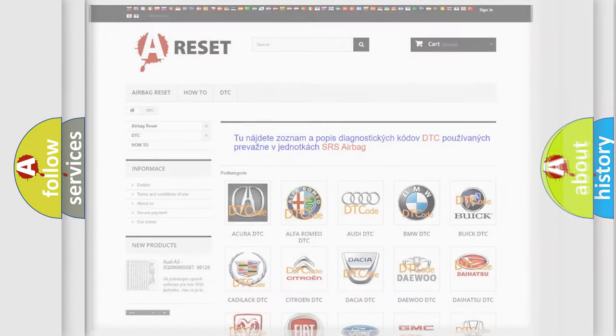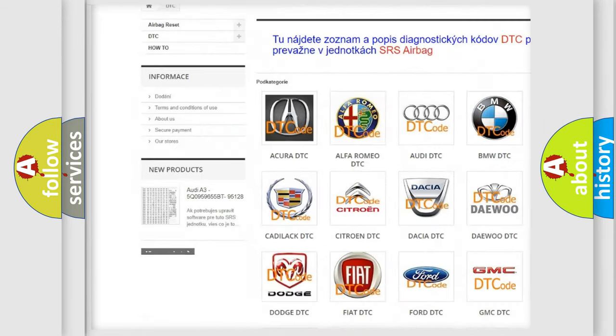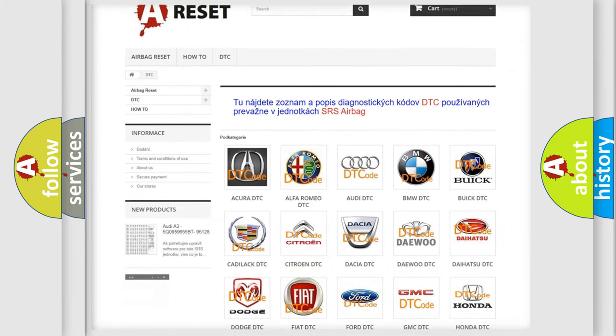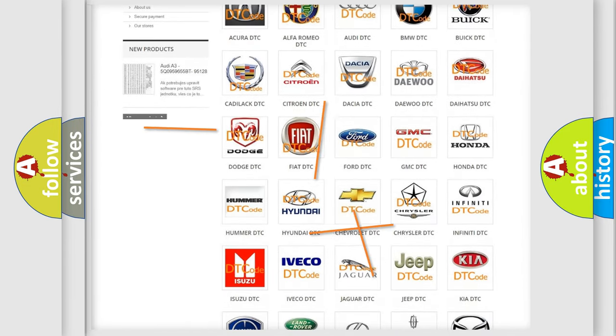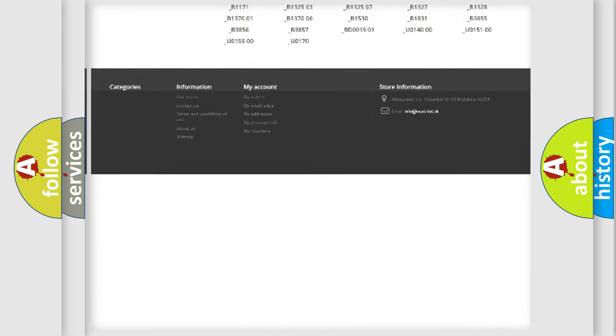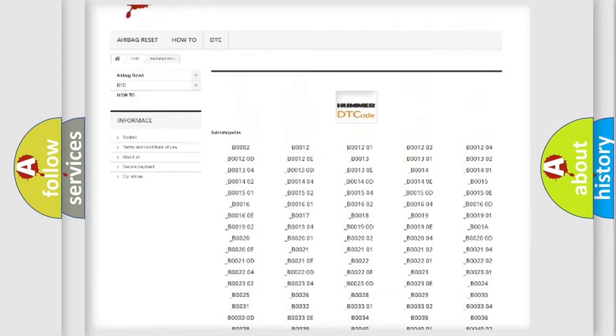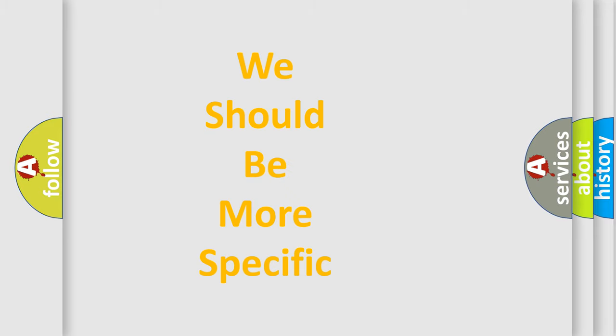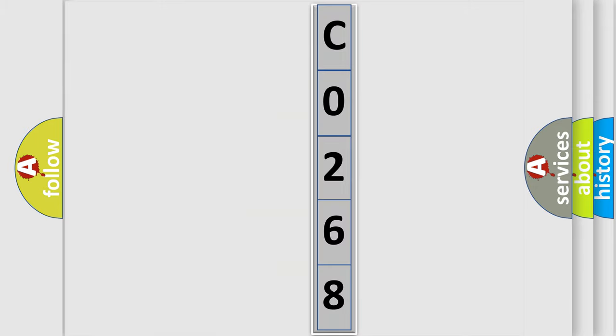Our website airbagreset.sk produces useful videos for you. You do not have to go through the OBD2 protocol anymore to know how to troubleshoot any car breakdown. You will find all the diagnostic codes that can be diagnosed in vehicles, and also many other useful things. The following demonstration will help you look into the world of software for car control units.